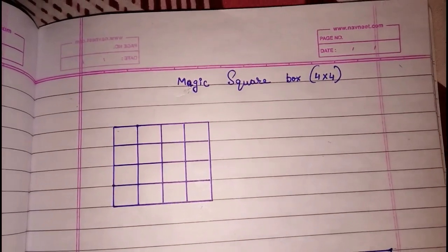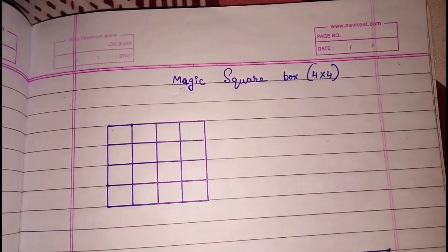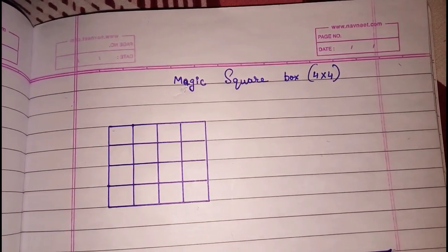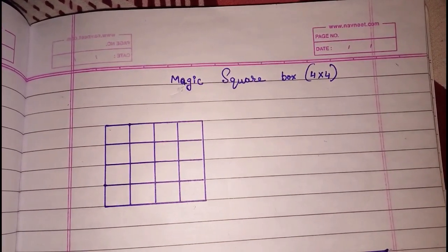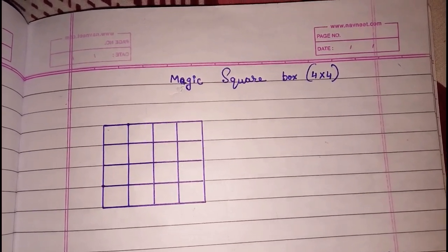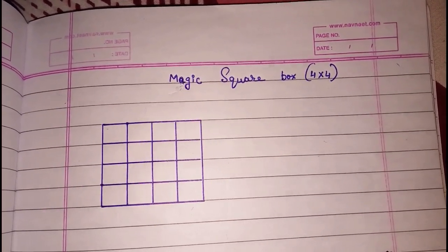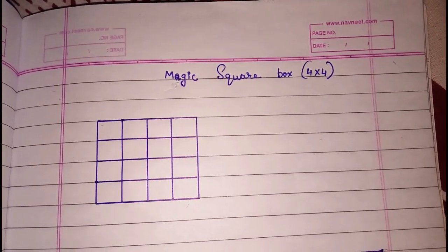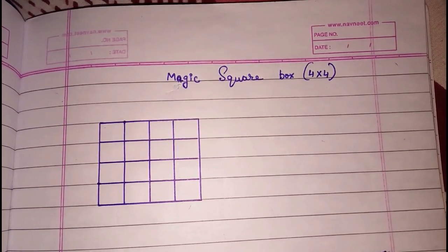Hello friends. Today we are going to study about a magic square box having 4 rows and 4 columns.